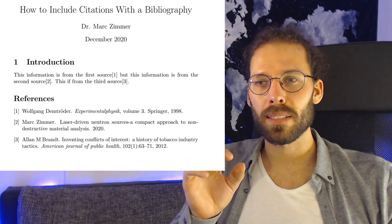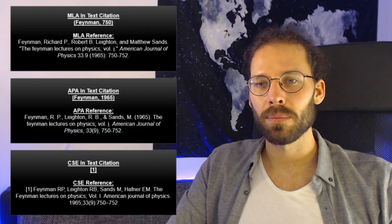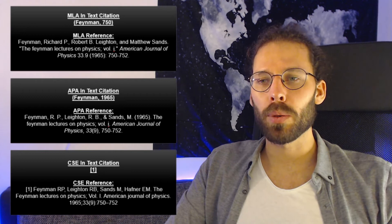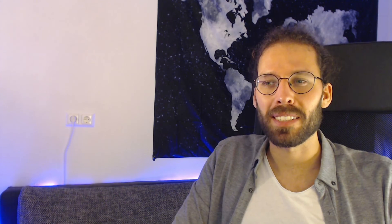For internet sources you also have to additionally include the title of the web page, the URL, and the date when you accessed the data. The most common way to include citations is a bibliography at the end of your document, with notes inside your text linking to the right citation. There are different styles such as MLA, APA, or CSE, and the one you need depends on your institution. In natural sciences this is typically the CSE style, where you use ascending indices in your text linking to sources in your bibliography.